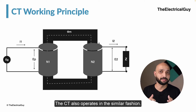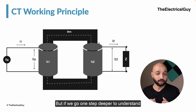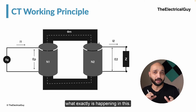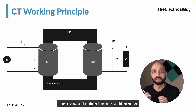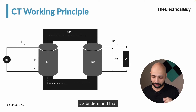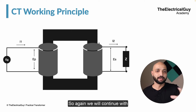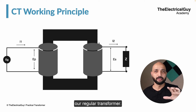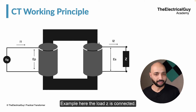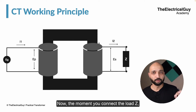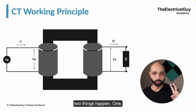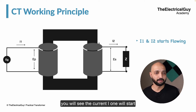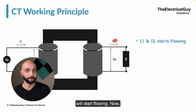The CT also operates in a similar fashion, but if we go one step deeper to understand what exactly is happening, then you will notice there is a difference. So let us understand that. We will continue with our regular transformer example. The load Z is connected. The moment you connect the load Z, two things happen: the current I1 will start flowing and the current I2 will start flowing.